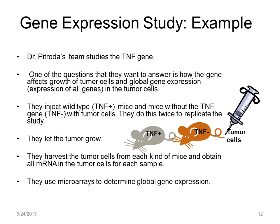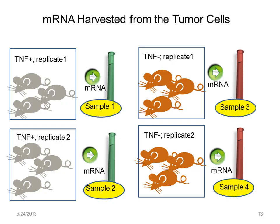The approach is global because we want to know the behavior of each and all students. In the real experiment, they injected wild type mice and mice lacking TNF with tumor cells. After a period of growth, they harvested mRNA from tumor cells from the two types of mice and determined the overall gene expression using microarrays. The experiment generated four samples where each sample is a pool of mRNA from a replicate. The mRNA is processed and labeled so that it can be applied to a microarray.